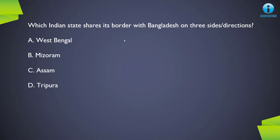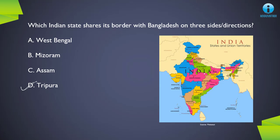Next question: which Indian state shares its border with Bangladesh on three sides or three directions? The correct answer is D, Tripura. Looking at the map, you can see Bangladesh borders Tripura on the west, on the north, and on the south. Only on the eastern side does Tripura share a border with Mizoram or Assam. So Tripura is the state that has a border with Bangladesh on all three sides.